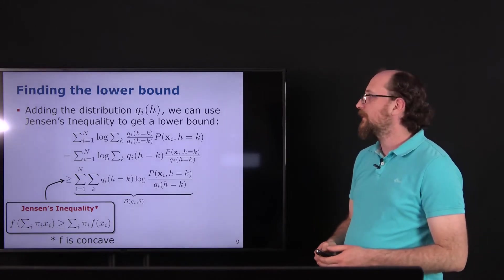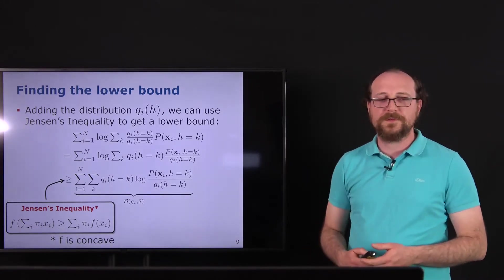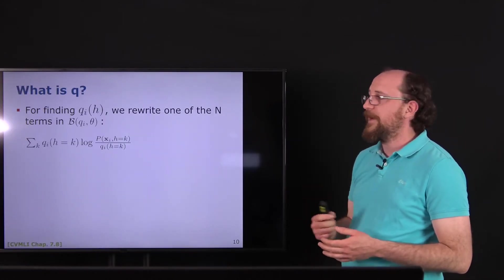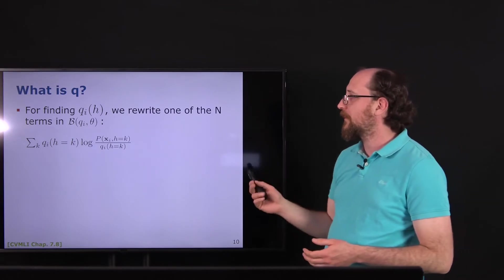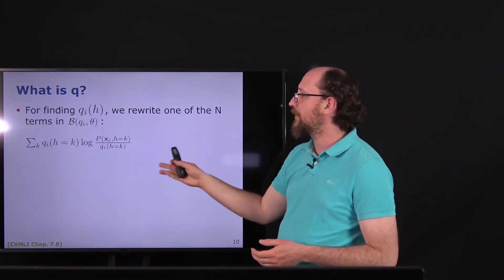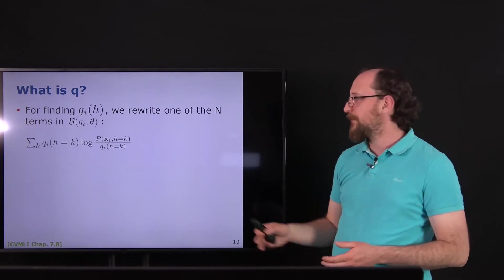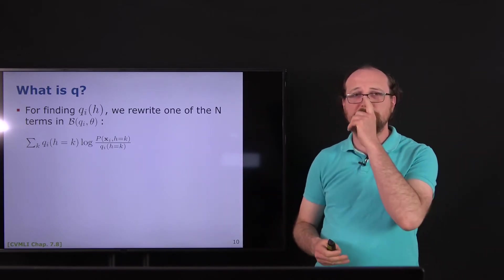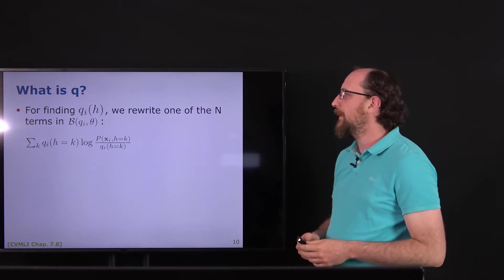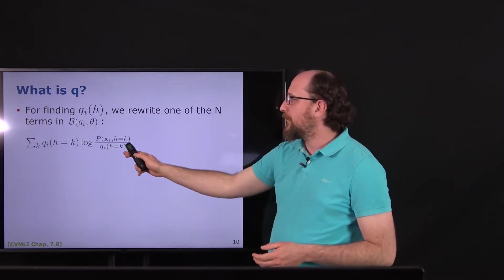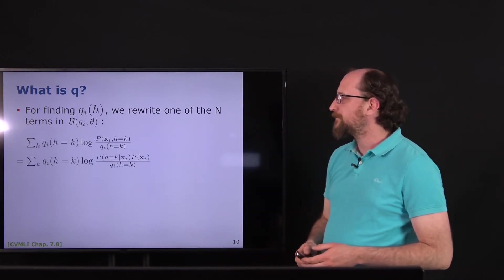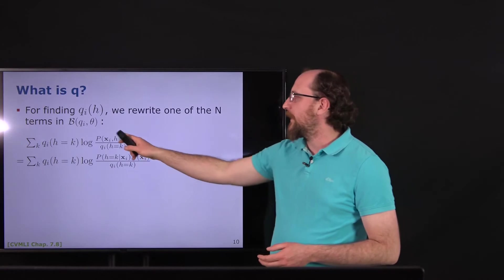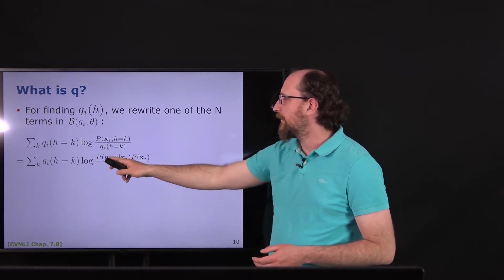The natural question is: what is q? To find q, we focus on one term of the sum over all examples — what holds for one example holds for all others. With one term of the lower bound, we can write the joint probabilities as p(h|x) · p(x), then take the logarithm to split the product.